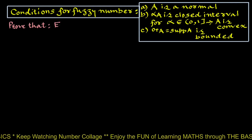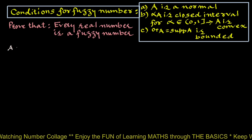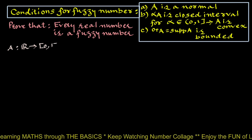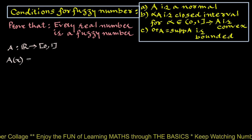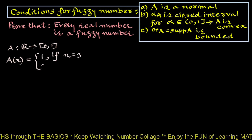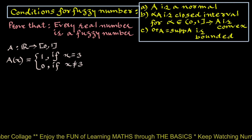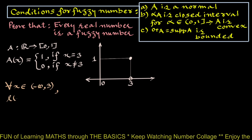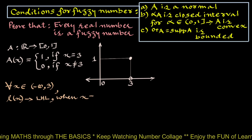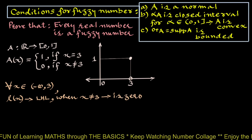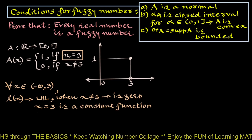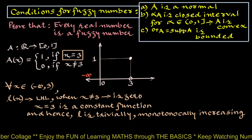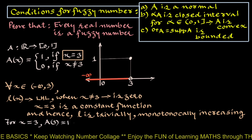We will prove that every real number is a fuzzy number. Let A be a fuzzy set defined on the real numbers with membership grades in [0, 1], where A(x) equals 1 if x equals 3, and 0 otherwise. The graph of this fuzzy set shows that for all x in (minus infinity, 3), the left-hand limit L(x) is 0, and being a constant function, L is trivially monotonically increasing. At x equals 3, A(3) equals 1, showing A is normal.